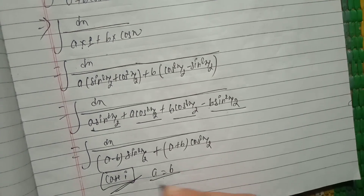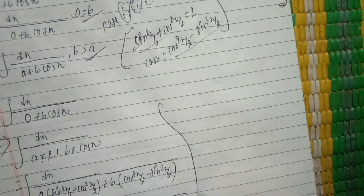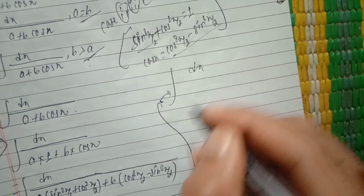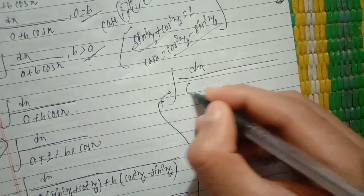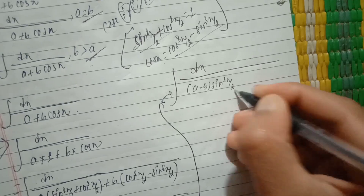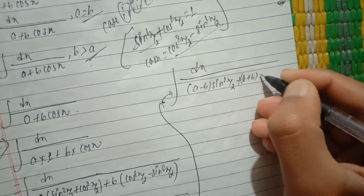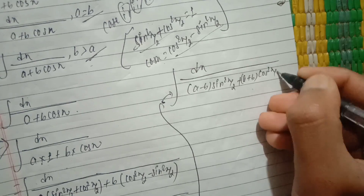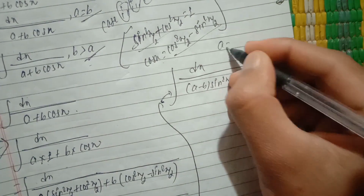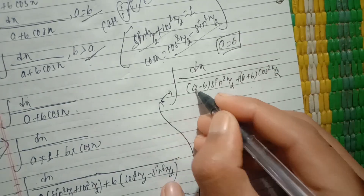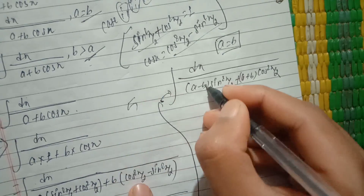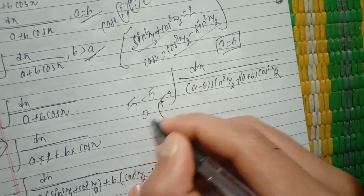This equals to dx divided by (a minus b)·sine square x by 2 plus (a plus b)·cos square x by 2. If b equals a, the terms simplify, and a plus b and a minus b terms are evaluated accordingly.